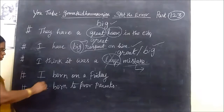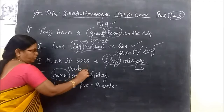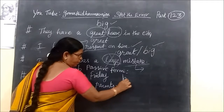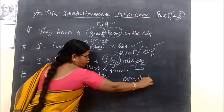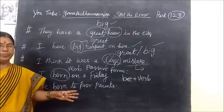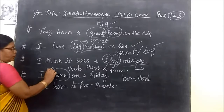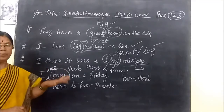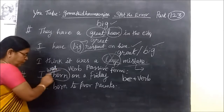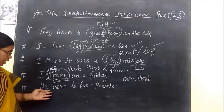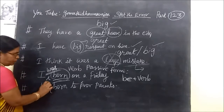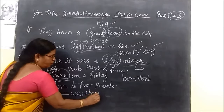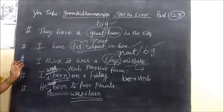Next: 'I born on Friday' is incorrect. 'Born' requires a passive form with a be-verb. So it should be 'I was born on Friday.' 'Born' is always used in the passive: be-verb plus born. For example: 'He was born to your parents.' The b-verb plus 'born' is the correct passive form.